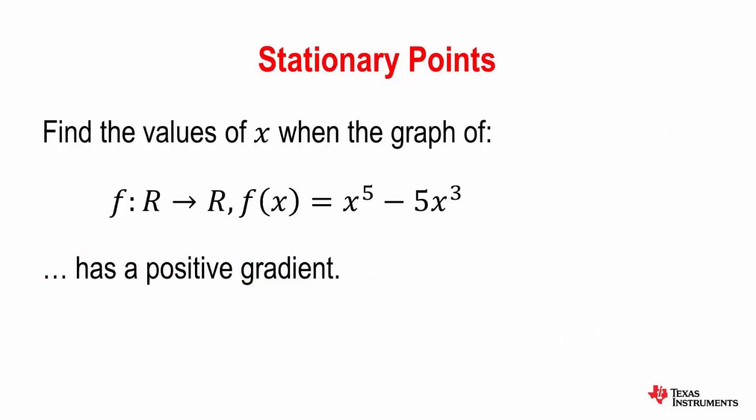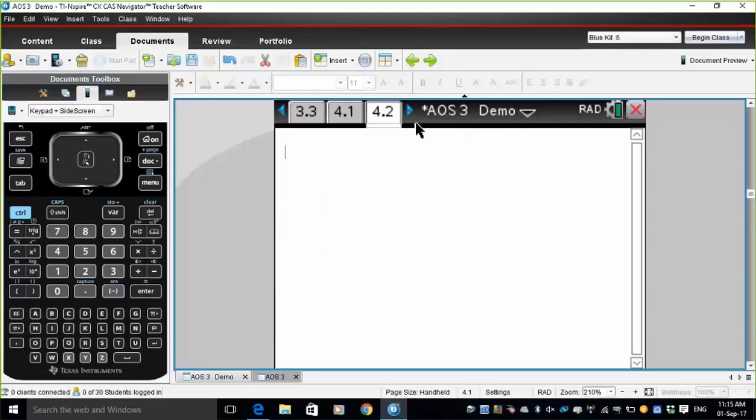So in this example we want to find the values of x when this graph, f(x) equals x to the fifth minus 5x cubed has a positive gradient. So once again we will be graphing this function.